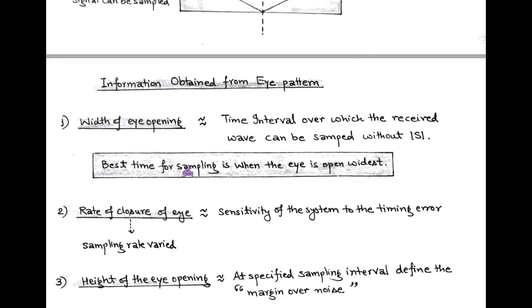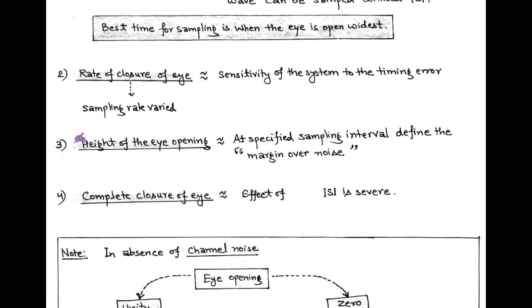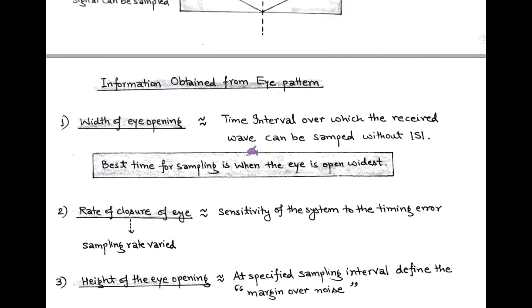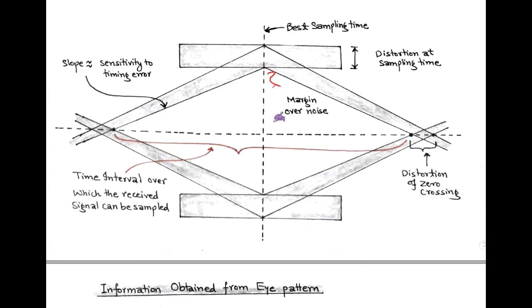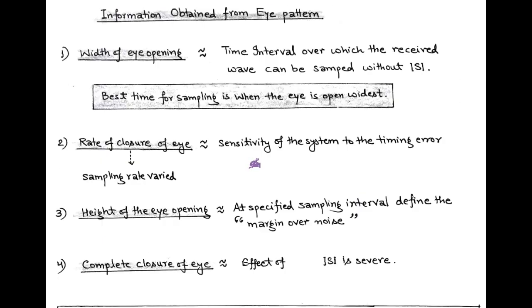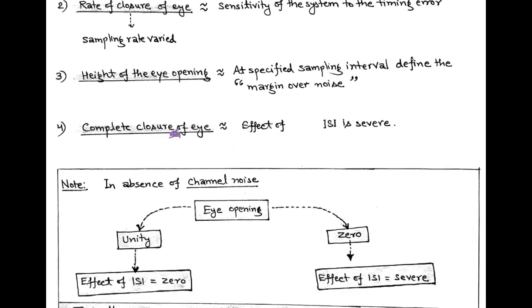The third observation is the height of eye opening. The height of eye opening at a specific sampling interval defines the margin over noise, or simply the noise margin. The last observation is the effect of inter-symbol interference. When inter-symbol interference is very severe in a baseband PAM system, there is a complete closure of the eye, which is an undesirable condition.